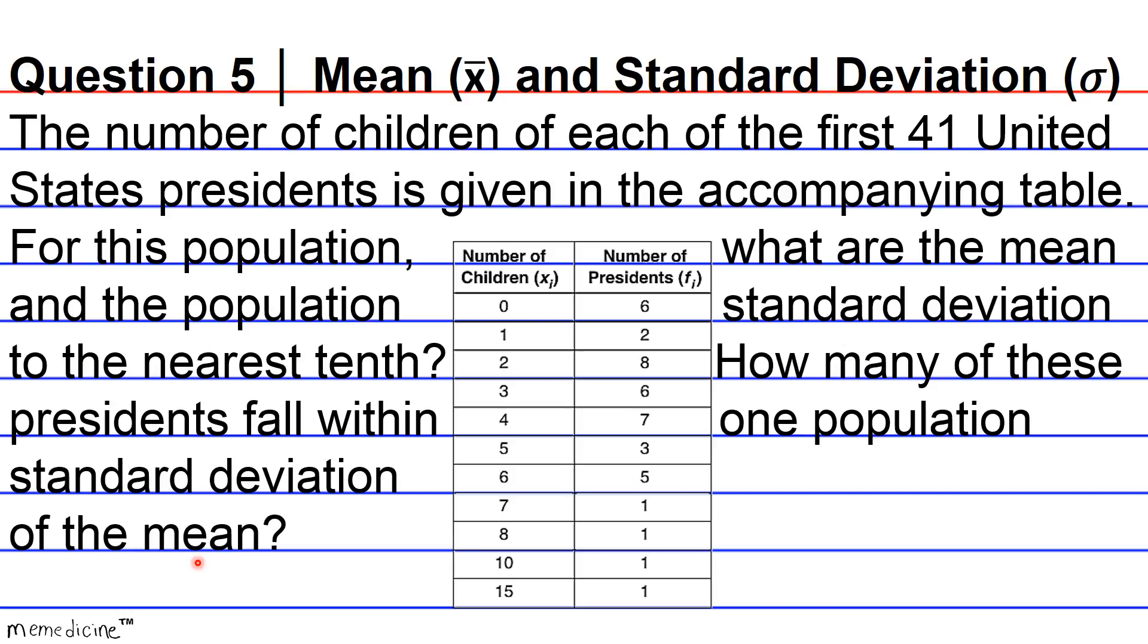Press pause if you need to, and I'll give you a moment to think. Before we jump into the solution steps, I want you to be careful not to make the assumption that this second column here of frequencies is an additional variable. Rather, this column is a frequency report of the number of times the variable of a particular number of children at each level occurred amongst the U.S. Presidents. The first 41 presidents. So this frequency should tally up to 41. If you're new to descriptive statistics, it may take you a few examples to grasp this frequency concept. Now for the solution.